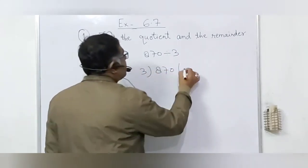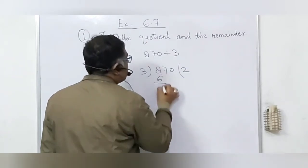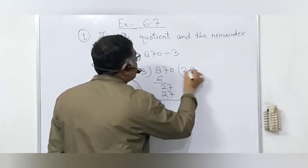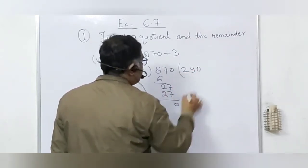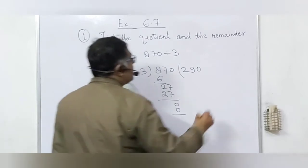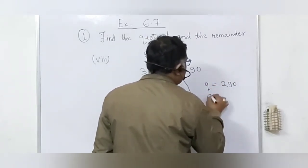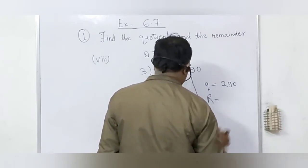870 divided by 3. 3 goes into 8 twice, that's 6. Bring down 7, that's 27. 3 goes into 27 nine times. Bring down 0, that's 0. Quotient is 290, remainder is 0.